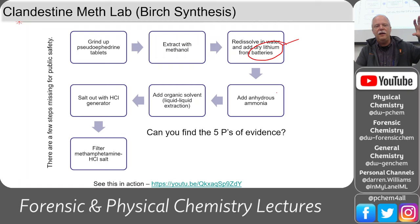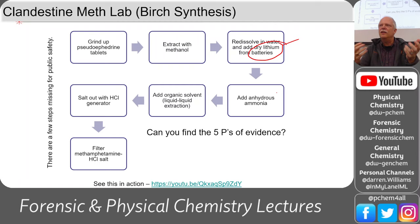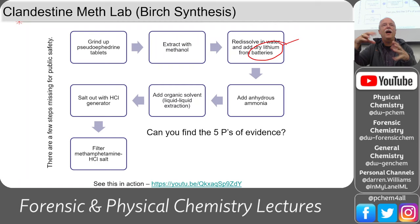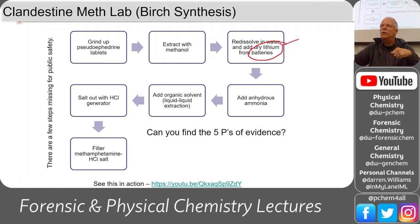Anhydrous ammonia can be obtained from agriculture — stealing it from farming operations where it's injected into the soil. Bacteria convert it to ammonium, then to inorganic nitrogen that plants can use. That's why farmers have large tanks of anhydrous ammonia. Meth cooks steal one of those tanks and transfer the ammonia into a propane tank using hosing — you open both valves, the ammonia flows in, then close them. That's the source of the blue valve seen on propane tanks in meth labs.